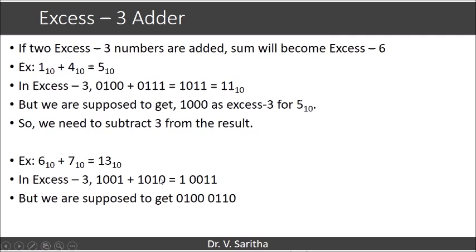So when we add these 2 numbers, we are getting 10011. But 13 in XS3 is 0100 0110.